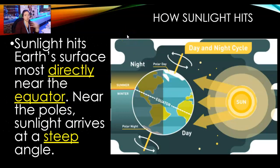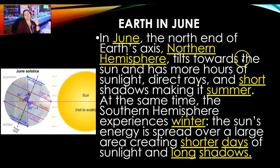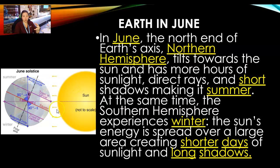Sunlight hits the Earth's surface most directly near the equator — that's where we almost get head-on sun. Near the poles, however, it arrives at a steep angle, if it arrives at all. You can see it hits the north pole but not the south. In June, the north end of the axis — for us in the northern hemisphere — is tilted towards the sun.